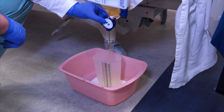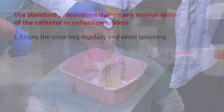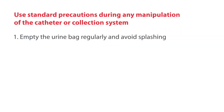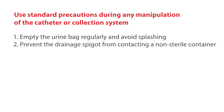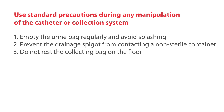Bacteria may also enter the urinary tract after emptying the drainage bag. To help reduce risk, use standard precautions during any manipulation of the catheter or collection system. Empty the drainage bag regularly using a separate clean collection container for each patient. Avoid splashing and prevent the drainage spigot from contacting a non-sterile container. Do not rest the collecting bag on the floor.